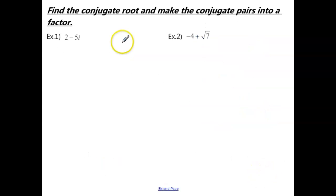Here, we just want to practice finding the conjugate root and making the conjugate pairs into a factor. So in the first example, we have 2 minus 5i, and then the conjugate root would be 2 plus 5i.